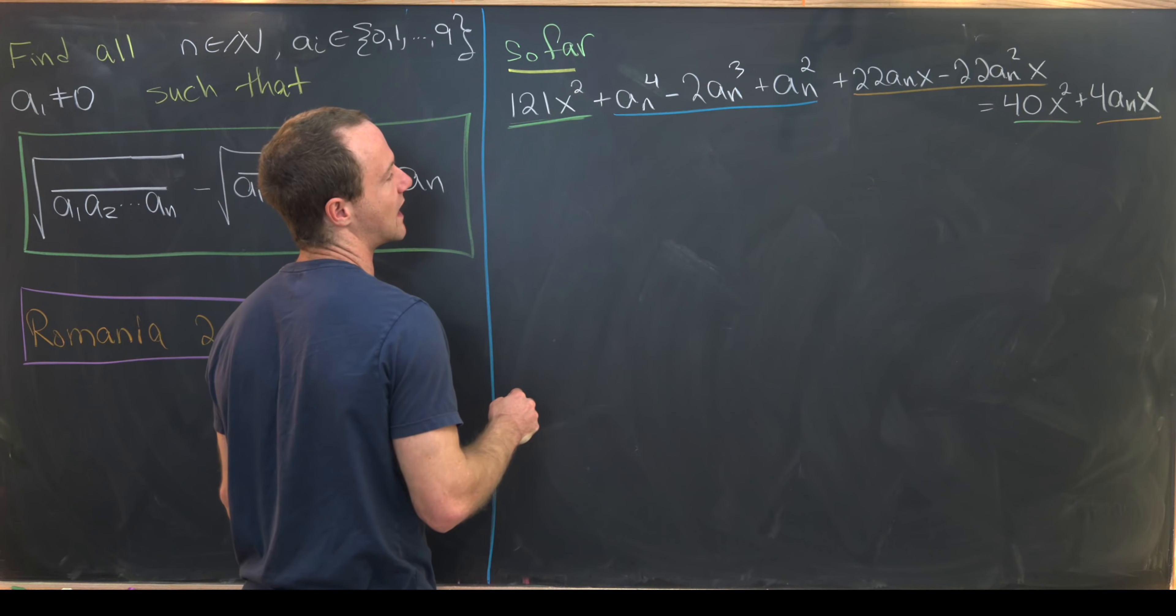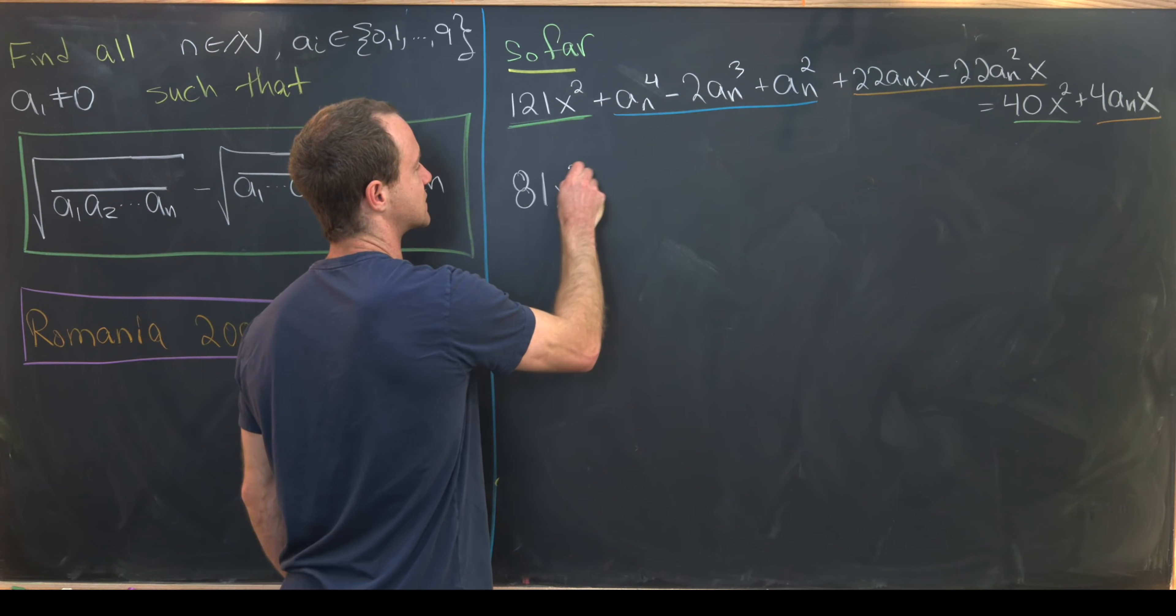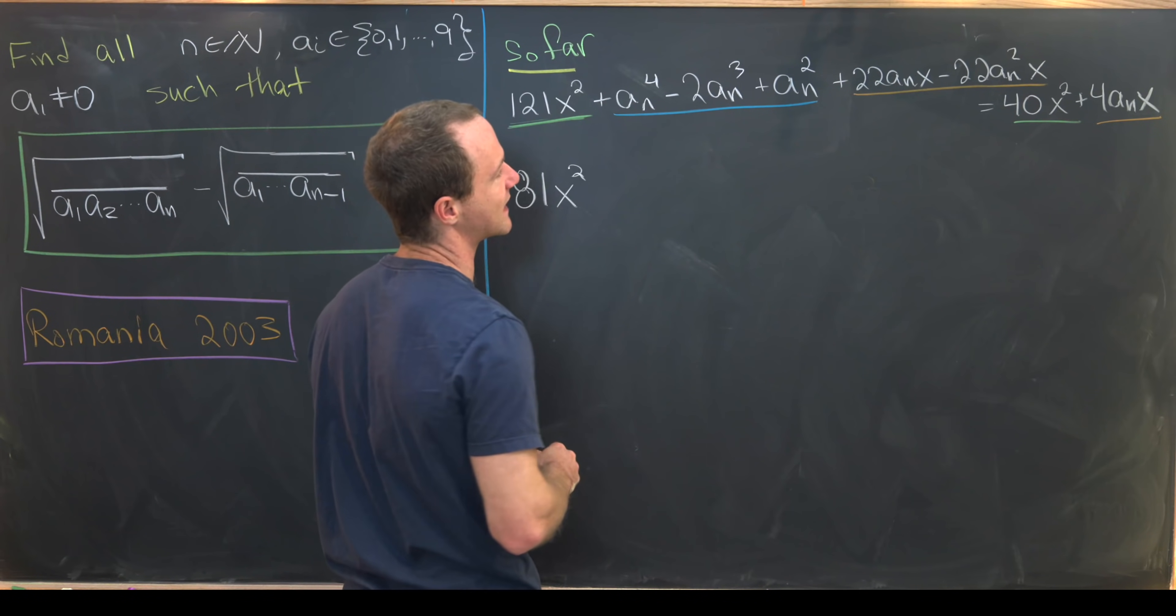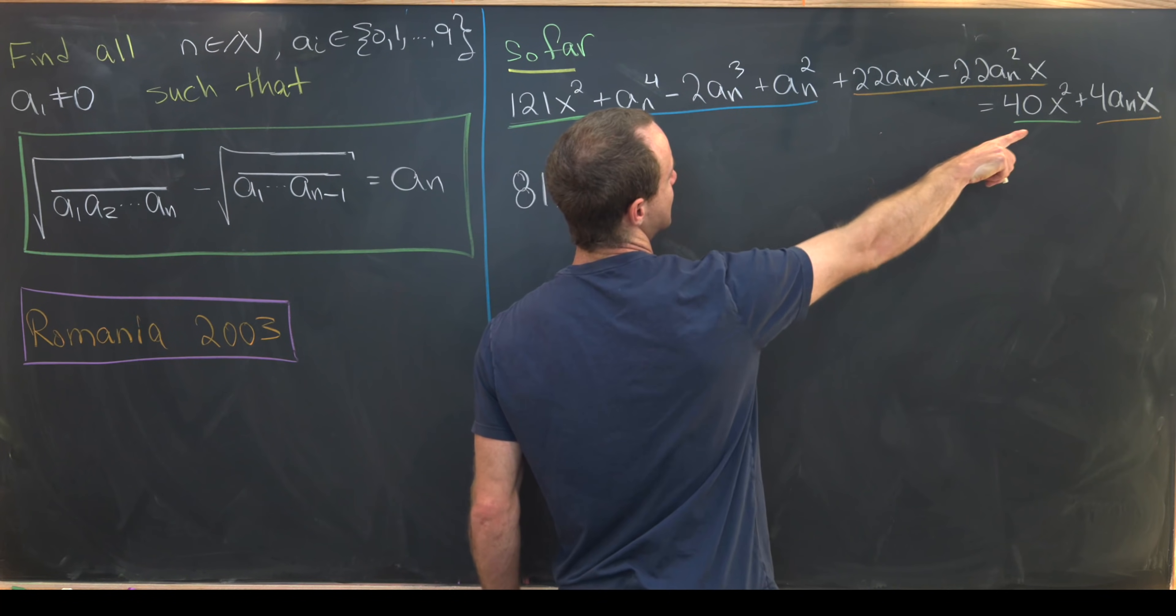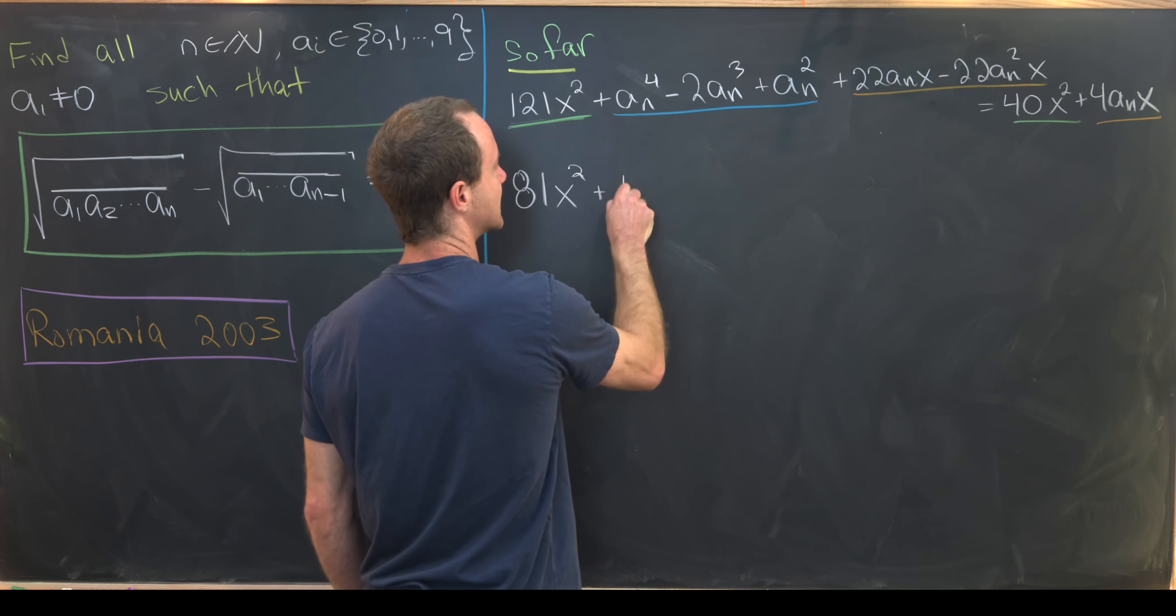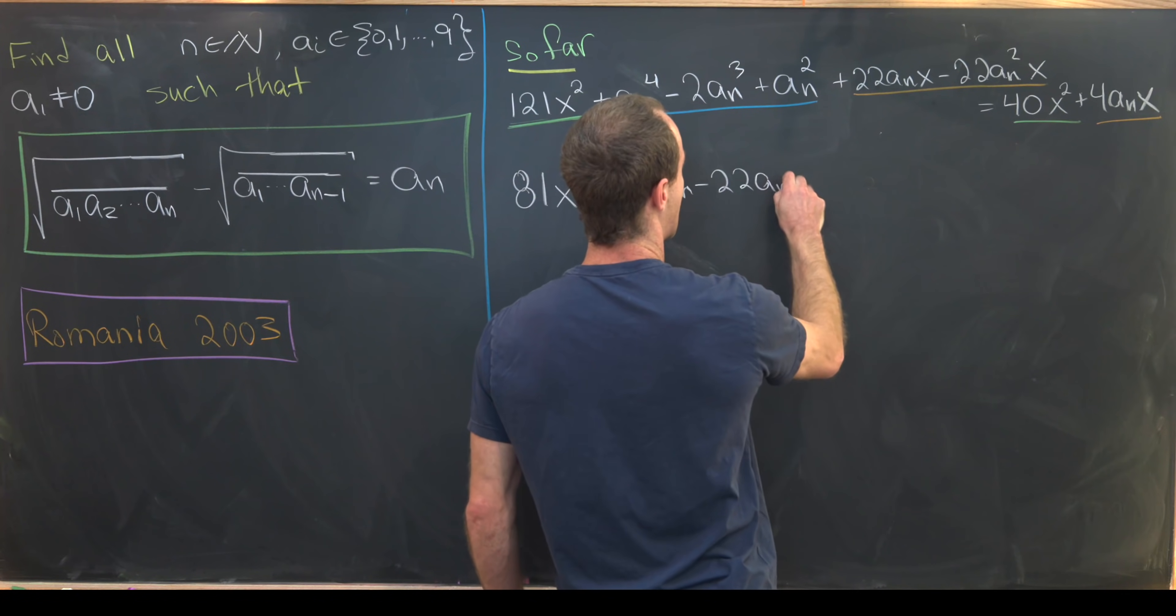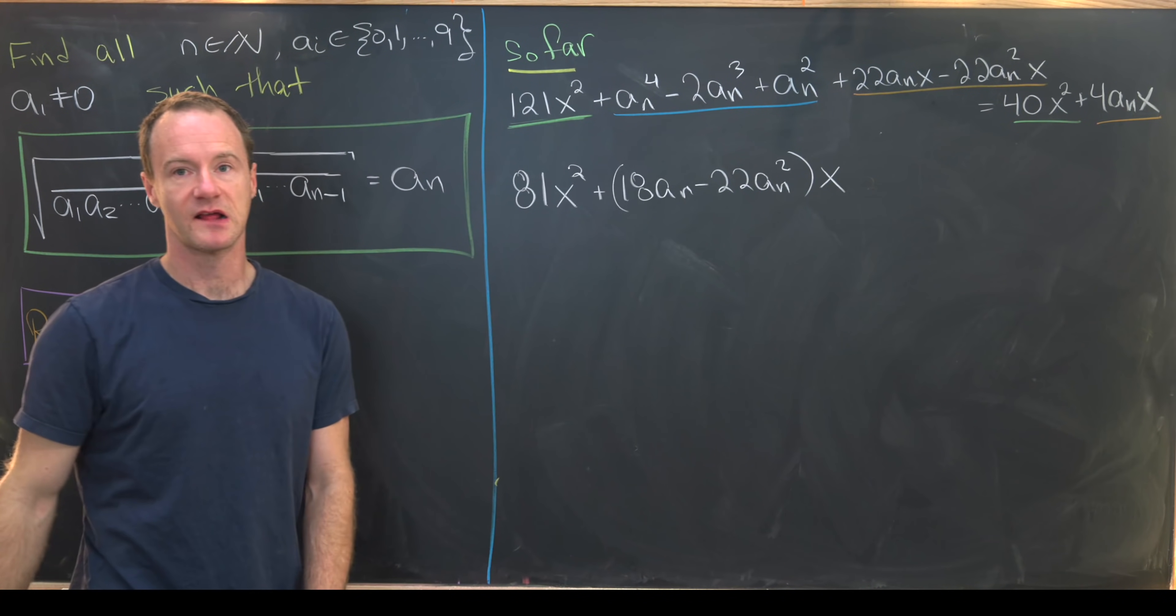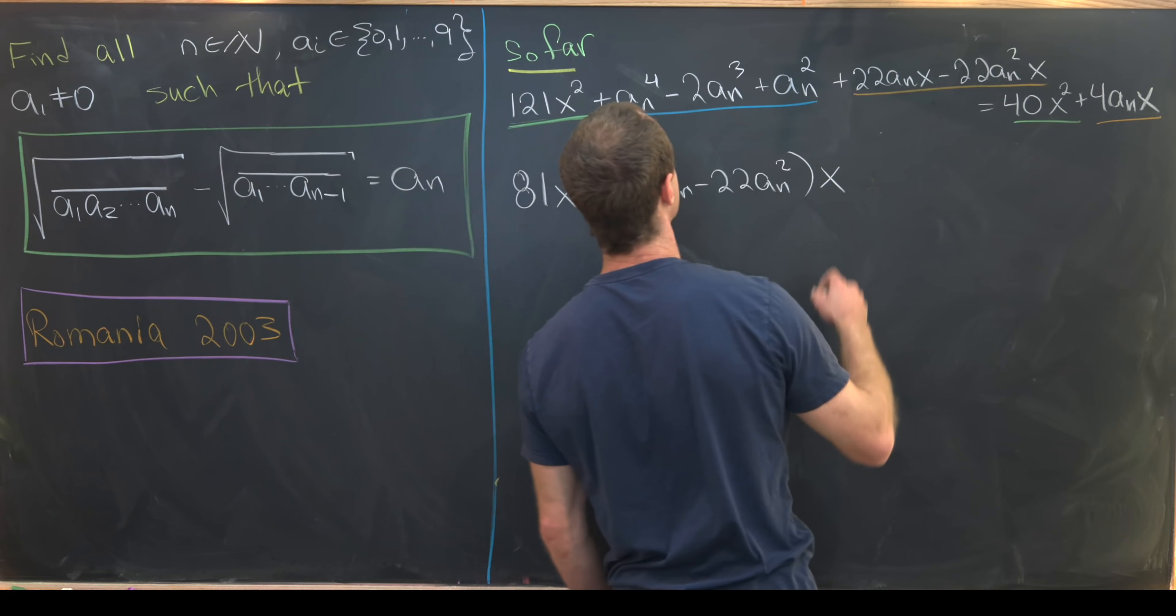So let's move this green over and that orange over and then maybe like put stuff together. So 121 minus 40, that's 81. So we have 81x². Then let's see our coefficients of x will be like this. Well, 22anx, well that's going to be minus 4. So that's going to be plus 18an minus 22an² times x. So we can just factor the x out.